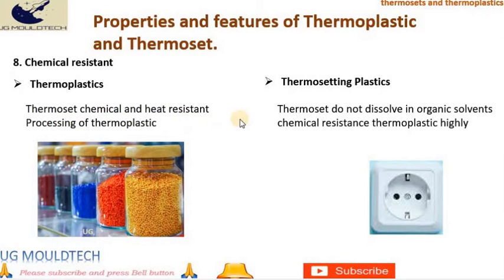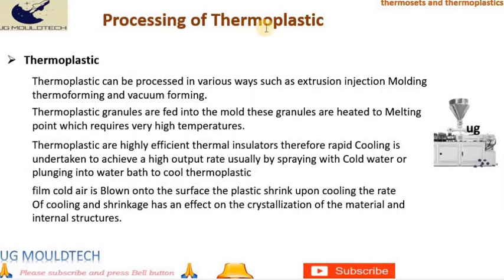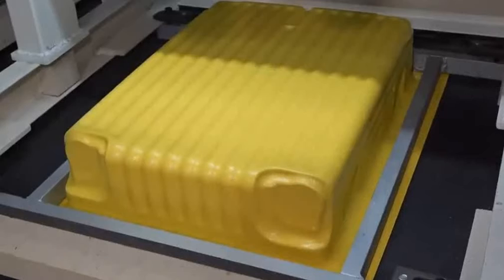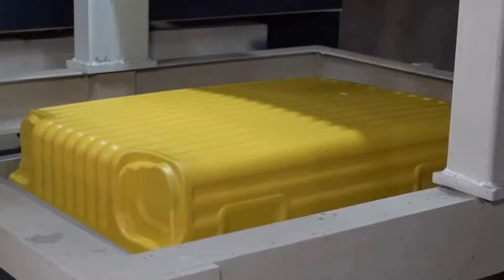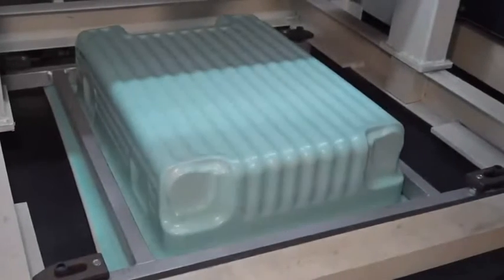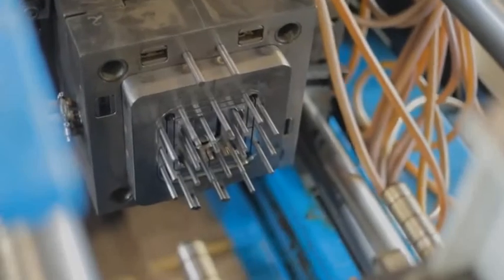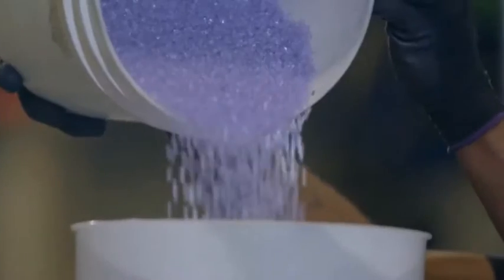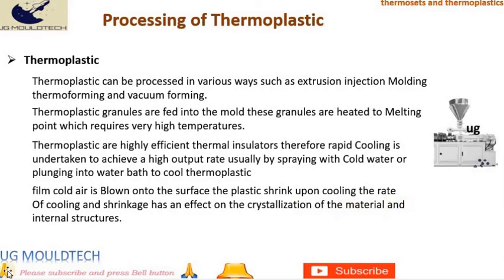Processing of thermoplastics: Thermoplastics can be processed in various ways such as extrusion, injection molding, thermoforming and vacuum forming. Thermoplastic granules are fed into the mold and heated to their melting point, which requires very high temperatures. Since thermoplastics are highly efficient thermal insulators, rapid cooling is undertaken to achieve a high output rate — usually by spraying with cold water or plunging into a water bath. To cool thermoplastic film, cold air is blown onto the surface. The plastic shrinks upon cooling, and the rate of cooling and shrinkage affects the crystallization of the material and its internal structures.